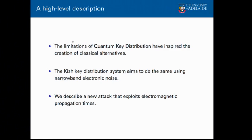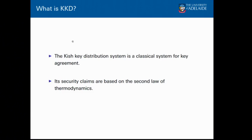We're going to describe a new attack that takes advantage of propagation times along the line. The Kish Key Distribution system, or KKD, is a classical system for key agreement that doesn't depend on the behaviour of single photons, so you don't need to worry about detector efficiency. It's simple and cheap, and its security claims are based not on the no-cloning theorem like quantum cryptography, but on the second law of thermodynamics.